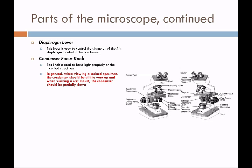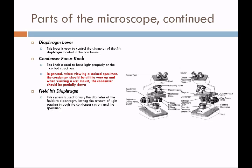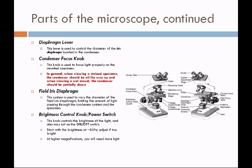Pretty much the same rule applies with the iris diaphragm. If you are looking at a stained specimen, you want the iris diaphragm to be open, and when you are looking at a living specimen, you want to partially close the iris diaphragm. The iris diaphragm is used to vary the diameter of the field iris, limiting the amount of light passing through the condenser.